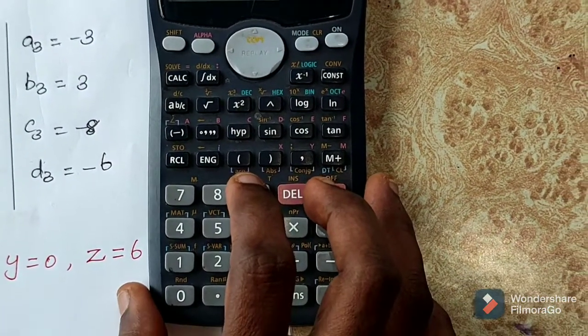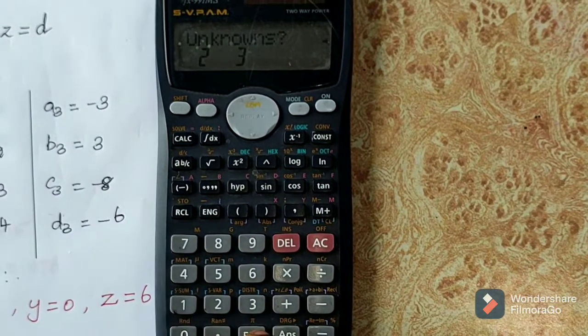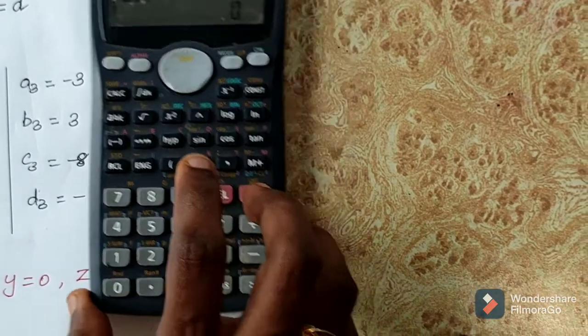Select unknowns, 2 or 3. We have 3 unknowns: X, Y, and Z. So press 3. Then give the values.